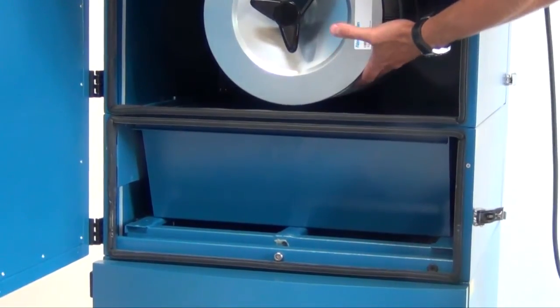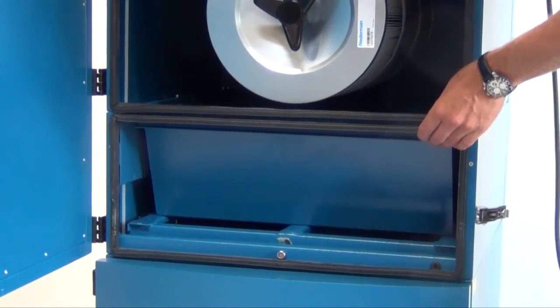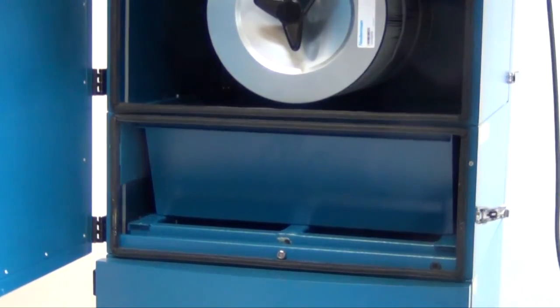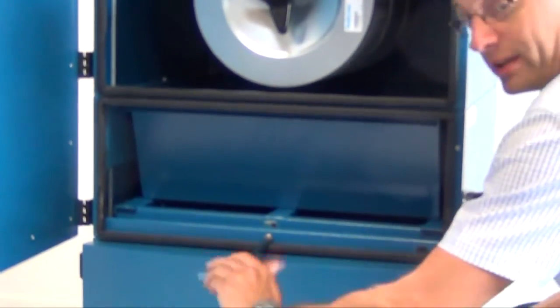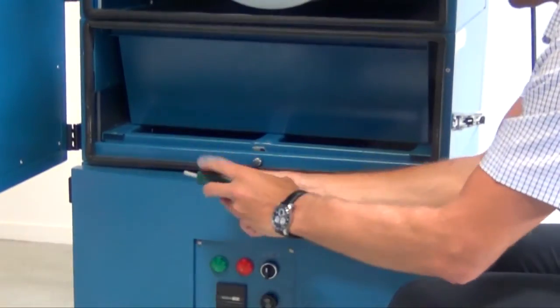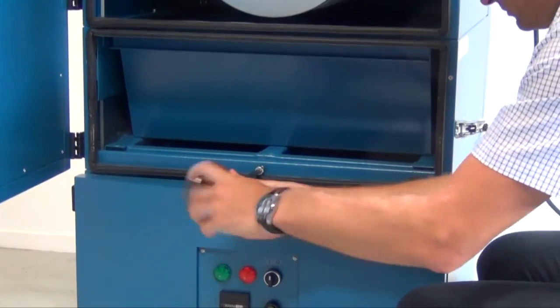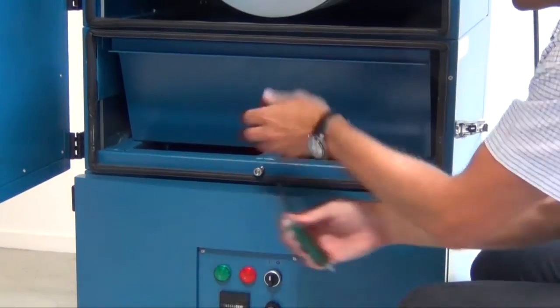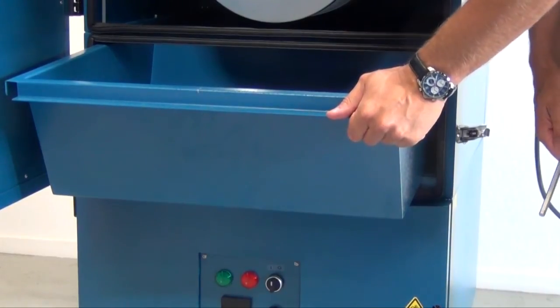The dust collected on the cartridge will end up in the bin under the cartridge, and it's very easy to take out the dust bin. You simply release this bolt here with the enclosed key, like that, and then you can dispose the dust in a safe way.